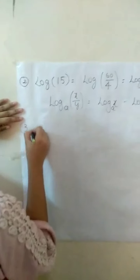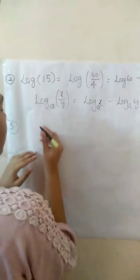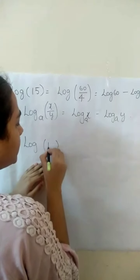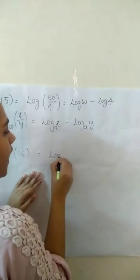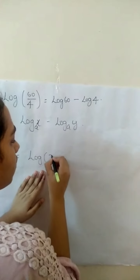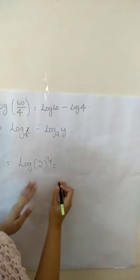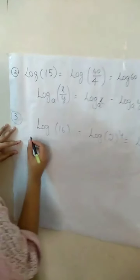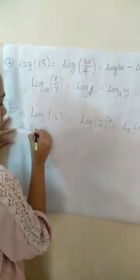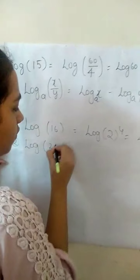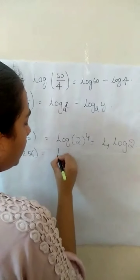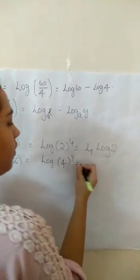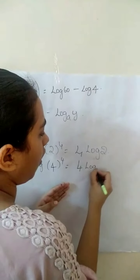Now third property. Log of 16. We can write it as log 2 power 4. It is equal to 4 log 2. Second example: log 256. It can be written as log 4 power 4. It is equal to 4 log 4. From this we conclude that log a power m equals m log a.